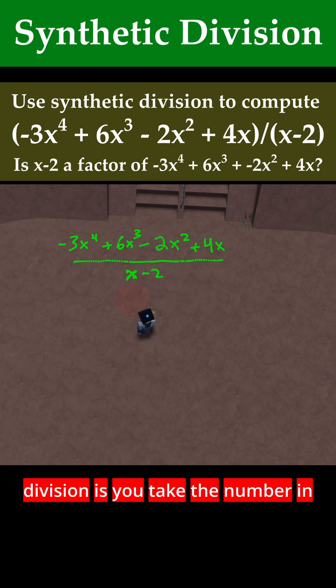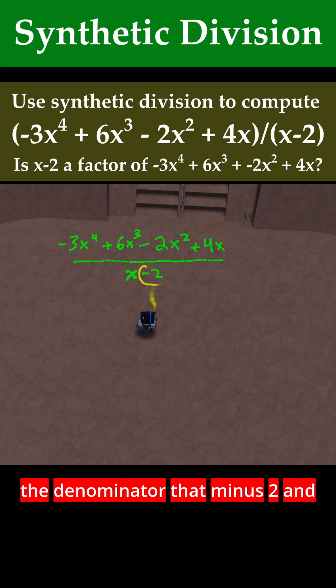The next step in synthetic division is you take the number in the denominator, that -2, and you flip it to a +2 for the sake of the synthetic division table. So let's set up that table now.